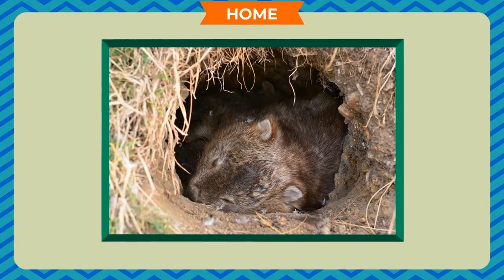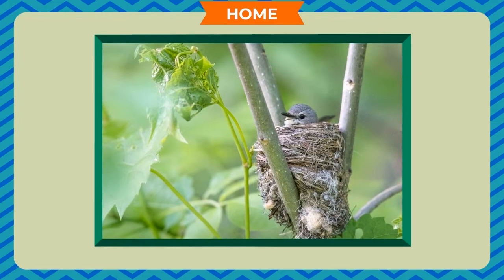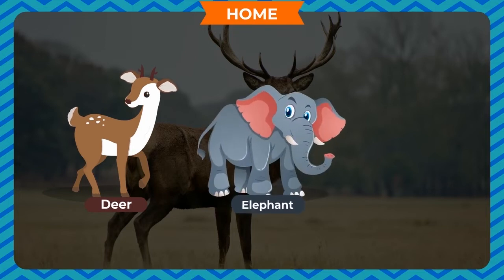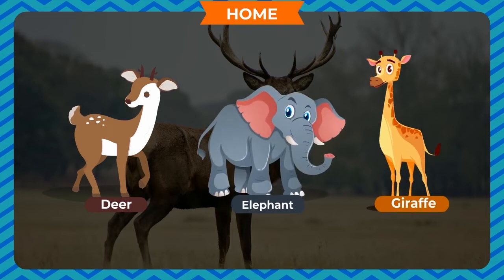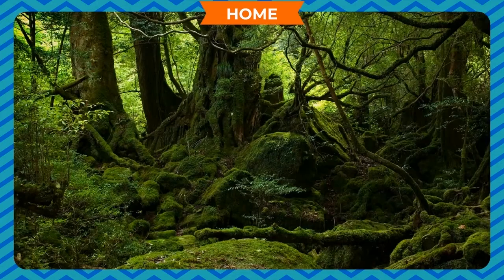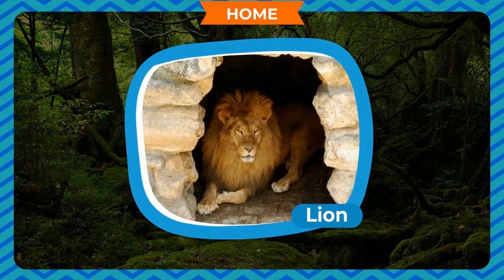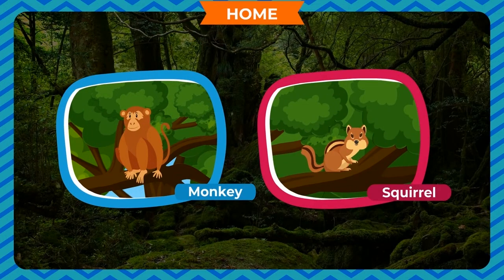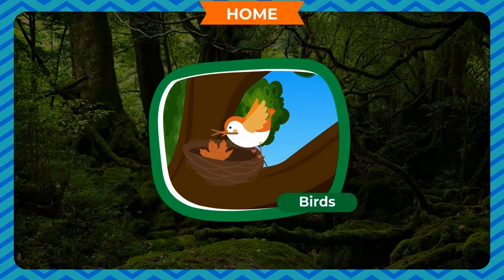Homes. Like humans, animals also need a place to live. Deer, elephants, giraffes, foxes, etc. live on land. Some animals live in special places. A lion lives in a den or a cave. Monkeys and squirrels live on trees. Most birds live on trees and build their nests using twigs and grass.